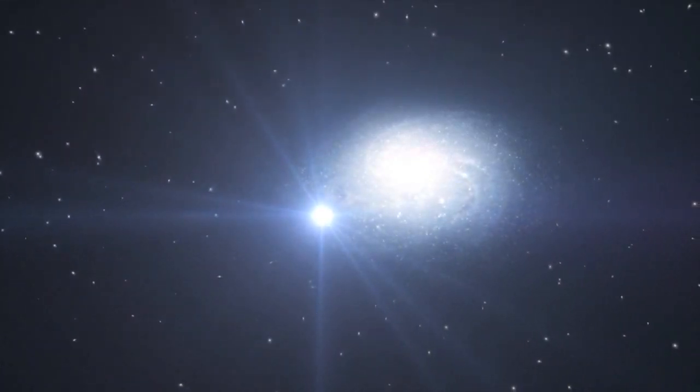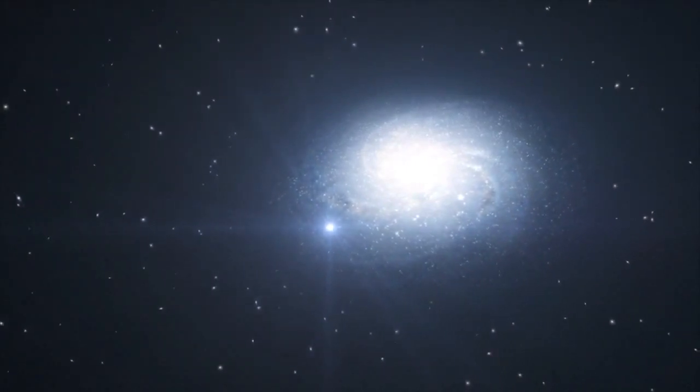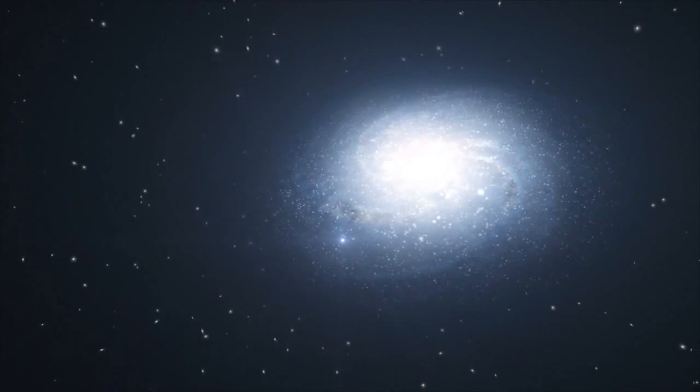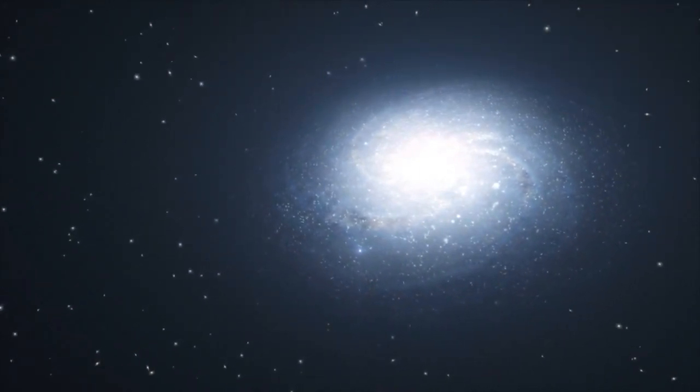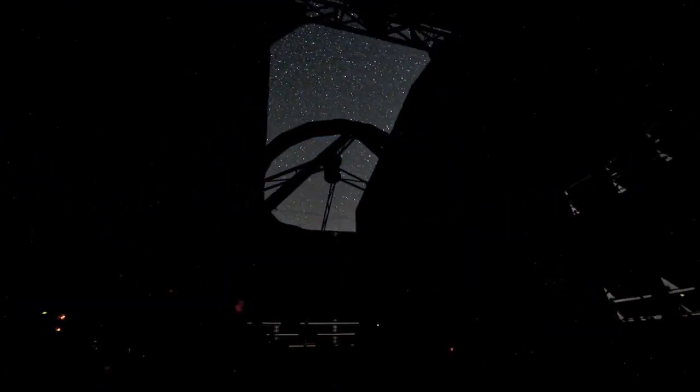Because gamma-ray bursts typically occur at a very large distance from Earth, their afterglow is faint. In addition, the afterglow fades very rapidly so that within a few hours it can be up to 500 times fainter still. Hence, in order to learn more about the nature of a gamma-ray burst and the influence of the explosion on its surroundings, the event must be observed as quickly as possible.